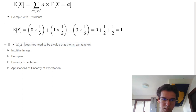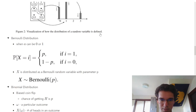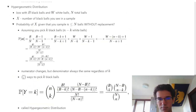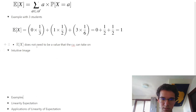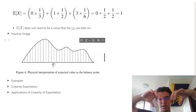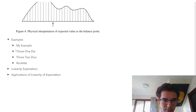The expected value does not need to be a value the random variable can actually take on. For example, the expected value might be 4.5, which isn't an achievable outcome. Visually, the expected value is the balance point of all the data — if there's more on one side, the balance point shifts accordingly.